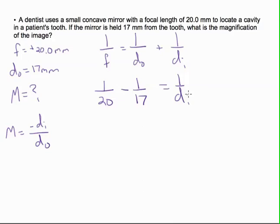And if we do the fraction part of the math, we get that 1 over the distance of the image is negative 0.464, and we get that our image distance is negative 113 millimeters.